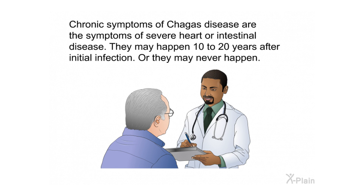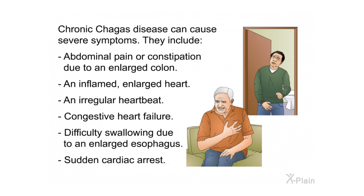Chronic symptoms of Chagas disease are the symptoms of severe heart or intestinal disease. They may happen 10 to 20 years after initial infection, or they may never happen. Chronic Chagas disease can cause abdominal pain or constipation due to an enlarged colon, an inflamed or enlarged heart, an irregular heartbeat, congestive heart failure, difficulty swallowing due to an enlarged esophagus, or sudden cardiac arrest.